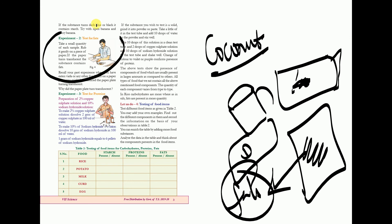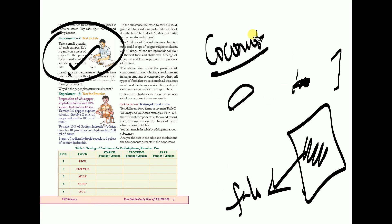You need to write this process in your exam. If you know another method you can also write it, but you must include this one because it is given as the textbook example. The next topic is the test for proteins.